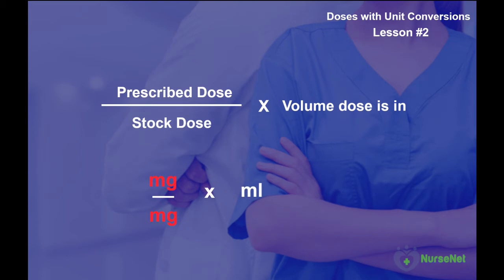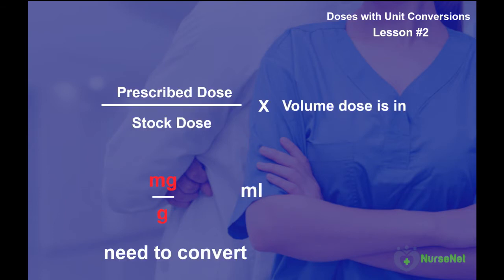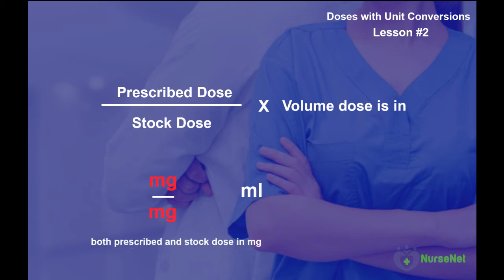But what if the information we're given isn't in the same units? For example, we have the prescribed dosage in milligrams but we have the stock dosage in grams. We will therefore need to do some conversion so that both the prescribed and the stock doses are calculated in the same metric units.